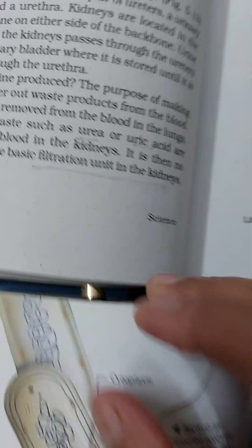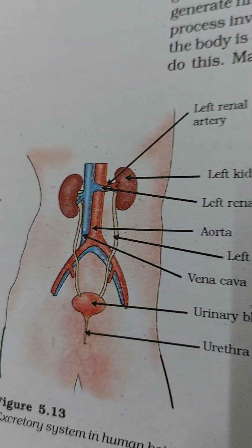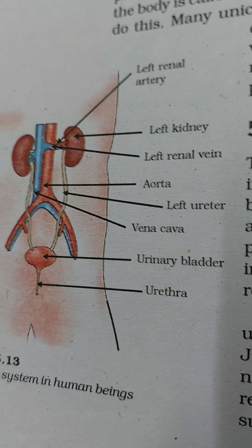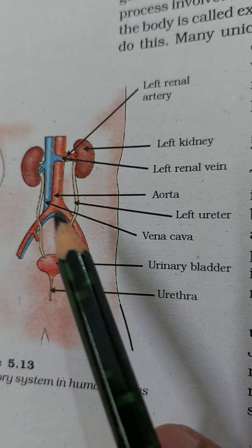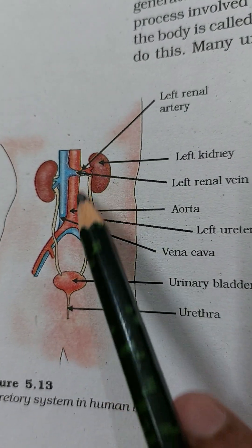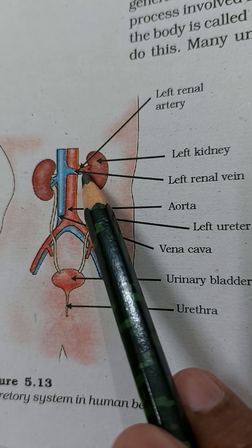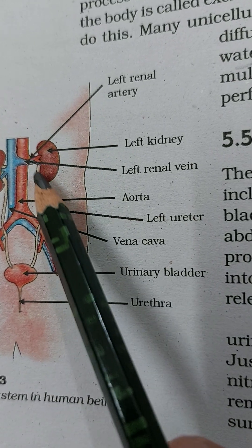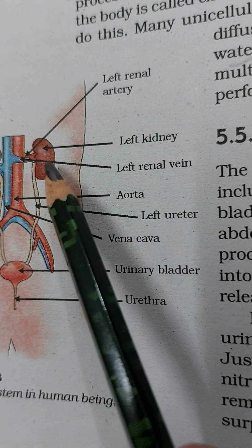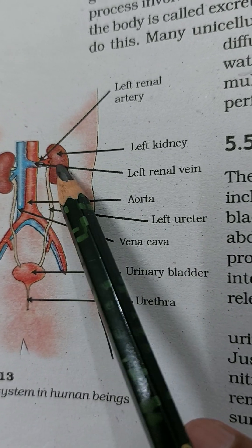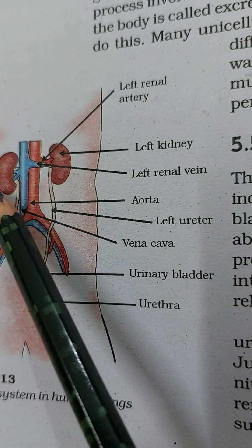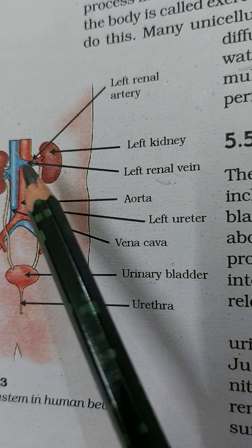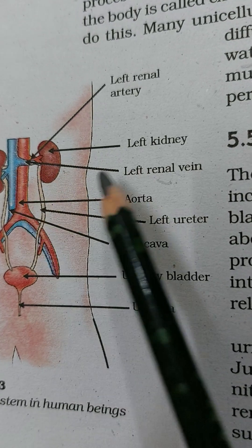In human beings, there is a well-developed excretory system. The main part of the excretory system is the kidney — there are two kidneys, placed on both sides of the backbone. In both kidneys, the blood supply comes through the renal artery: the left renal artery for the left kidney and the right renal artery for the right kidney.